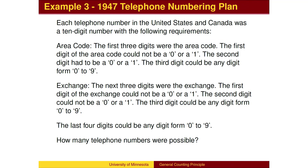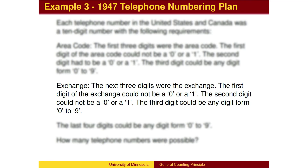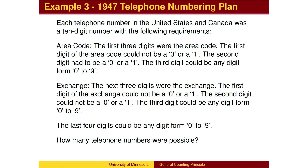Here is a final example. In 1947, the United States and Canada adopted a telephone numbering plan. The first three digits were the area code. The area code could not start with 0 or 1 — 0 would dial the operator, and 1 was an indicator that you were calling long distance. The second digit had to be a 0 or a 1 to distinguish area codes from exchanges. The exchanges could also not begin with 0 or 1, and their second digit could also not be 0 or 1. Otherwise, all of the digits 0 through 9 were allowed. How many phone numbers were possible?